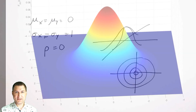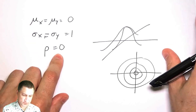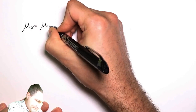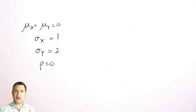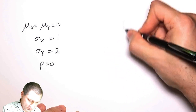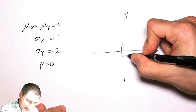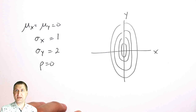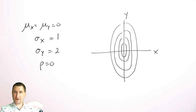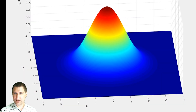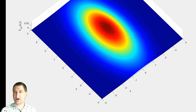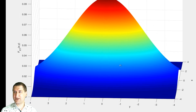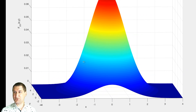What happens if I still have 0 means and rho equals 0, but instead make sigma_x equal to 1 and sigma_y equal to 2? That's saying the variance in y is twice as big as in x. Looking from above, I'd expect a topographical map with ellipses instead of circles. And indeed, looking at that PDF in MATLAB, I see exactly those ellipses, longer in y than in x, with a broader distribution on the y side and a skinnier one on the x side.